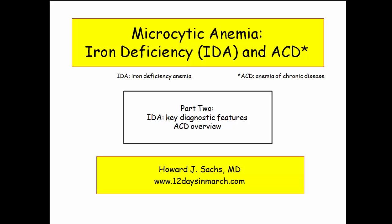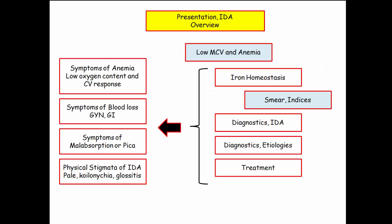Welcome back to 12 Days in March. In this section, we'll pick up our discussion of iron deficiency anemia and anemia of chronic disease, focusing on key diagnostic features. Recalling our discussion of iron homeostasis, let's move toward the diagnosis of iron deficiency anemia, starting with smear features and hemoglobin indices.